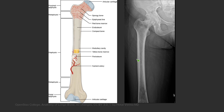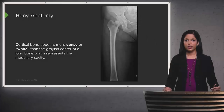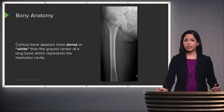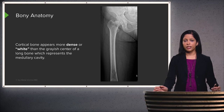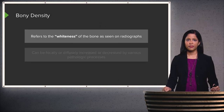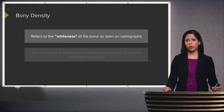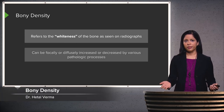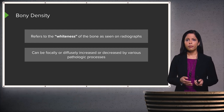Within the shaft you have the cortex and then the medullary cavity in the middle. The cortical bone or cortex appears more dense or more white than the grayish center, which is the medullary cavity. Bone density refers to the whiteness of the bone as seen on a radiograph. It can be focally or diffusely increased or decreased in density by many different pathologic processes.